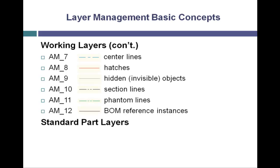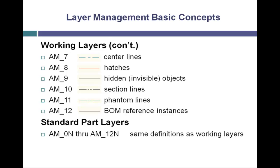In addition to working layers, there are also standard part layers. These can be used when inserting standard parts such as fasteners or structural steel shapes. They have the same basic names as the working layers but the letter N has been added to the end of the name. The colors and line types are all the same by default. There is a utility that will turn on and off all of the standard part layers with a single click, which can be useful to temporarily shut off all the fasteners in a drawing. However, it will also shut off any structural steel shapes that may have been inserted. The use of these standard part layers is an option that does not have to be used.